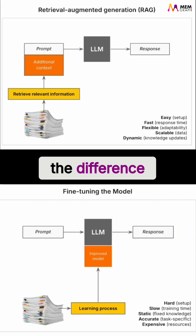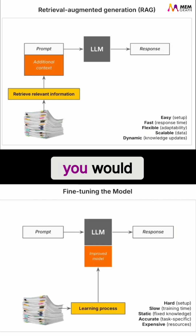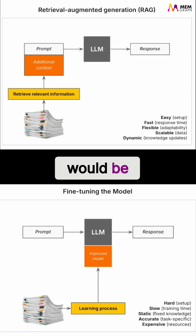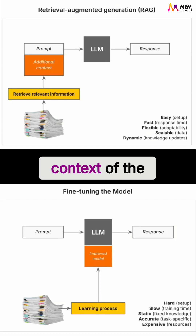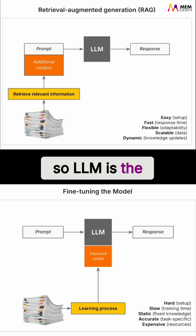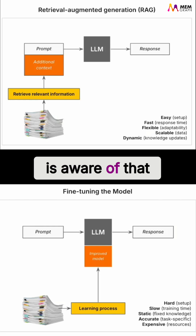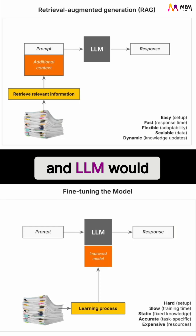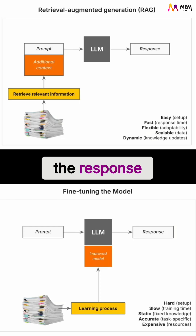To explain the difference: in RAG, you would actually retrieve the relevant information from your documents. That amount would be the one that can fit in the additional context of the prompt. You would give that to the LLM, so the LLM is aware of that knowledge, and the LLM would then be able to generate the response.